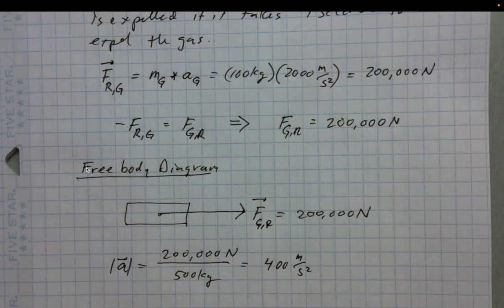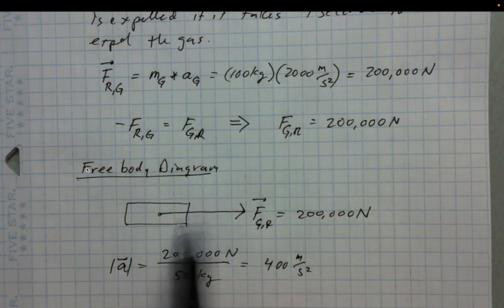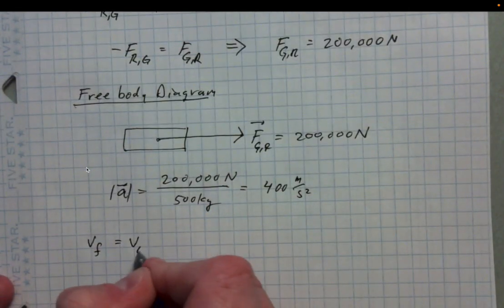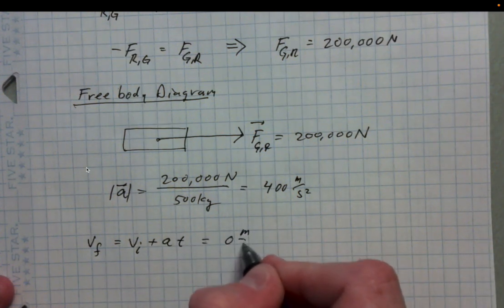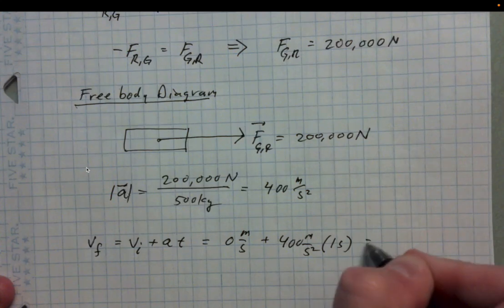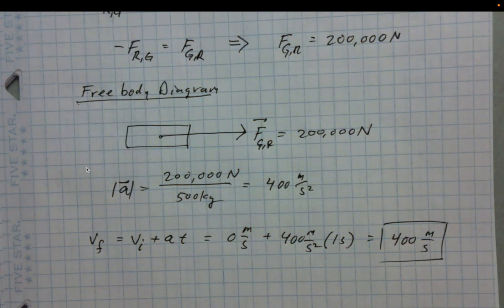The gas is expelled over 1 second, after which the force stops and the rocket continues at constant velocity. Using kinematics: vf = v0 + at = 0 + 400 m/s² × 1 s = 400 meters per second.